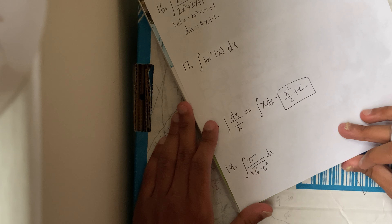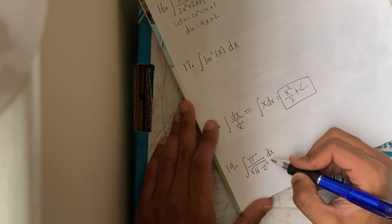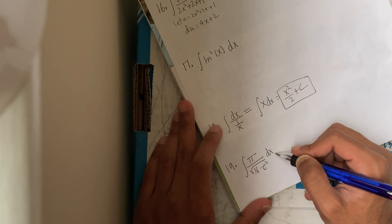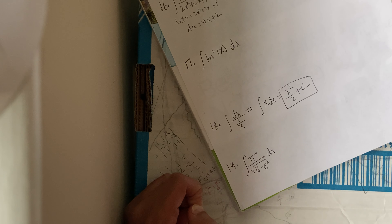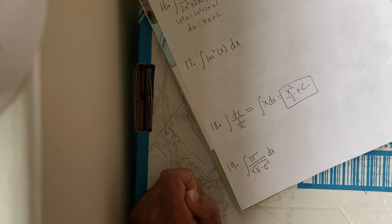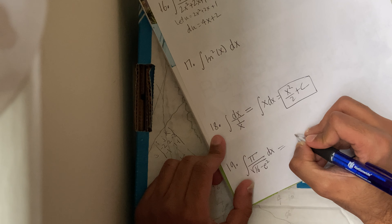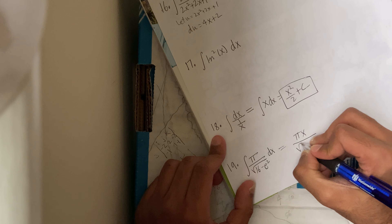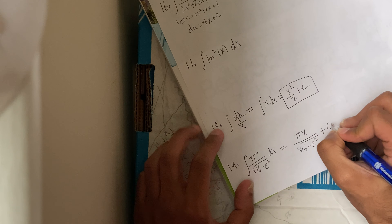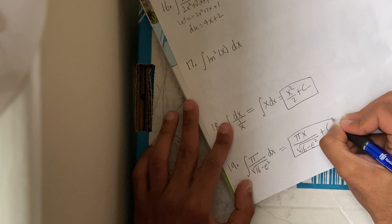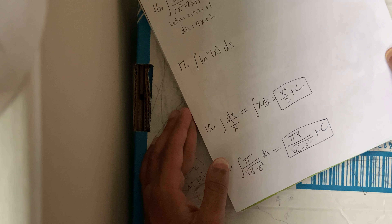Number 19: the integral of π over √(16 − e²) with respect to x. I don't see an x in there, so that means it's x raised to 0. This is the easiest integral — it's just πx over √(16 − e²) plus c. I'm pretty sure you got trolled by it.